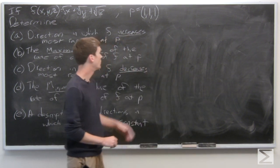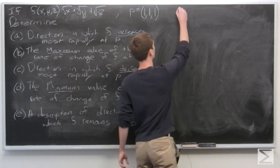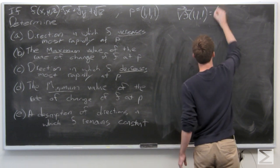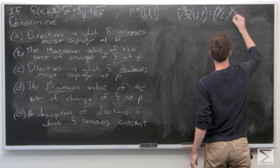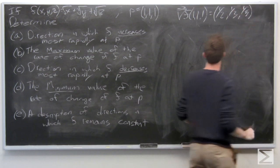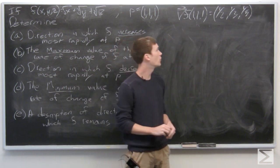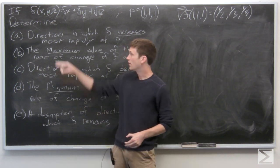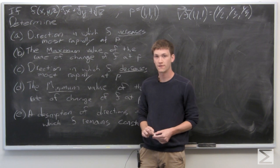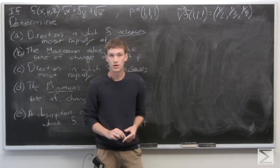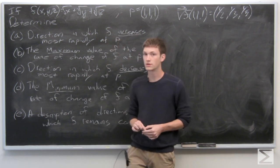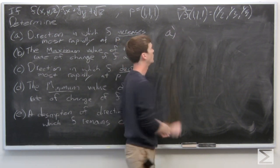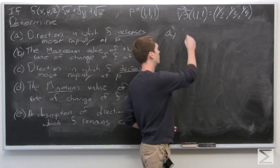We can recall from a previous exercise that the gradient vector of f at the point (1, 1, 1) is equal to (1/2, 1/3, 1/5). We want to determine the direction in which f increases most rapidly at p. We know that the direction in which f increases most rapidly is the same direction as the gradient vector, and we want it to be a unit vector. So for part a, we can just normalize the gradient vector.